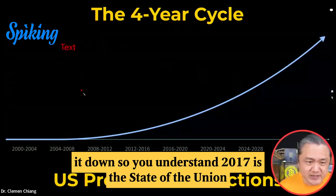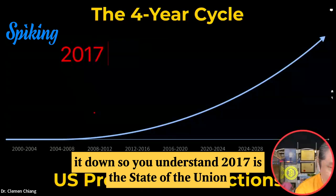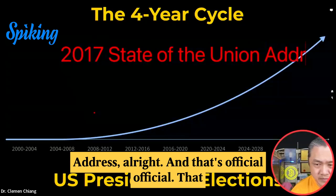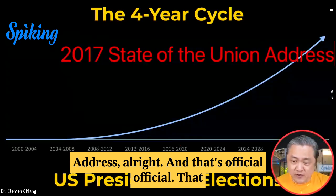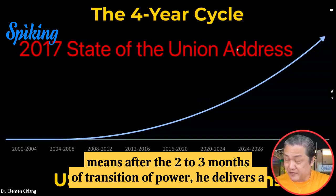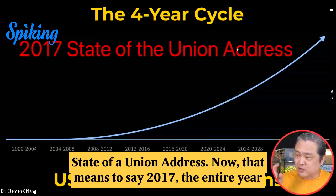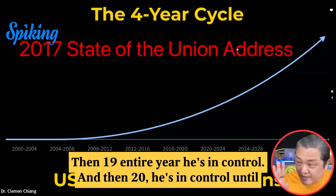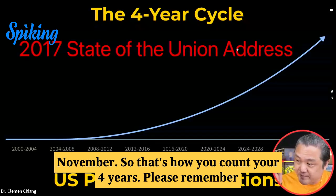Let me write it down so that you understand. 2017 is the State of the Union address — that's official. That means after the two to three months of transition of power, he delivers the State of the Union address. So that means 2017, the entire year, he's in control. 2018 will be the second entire year he's in control. Then 2019, entire year he's in control. And then 2020, he's in control until November. That's how you count your four years.